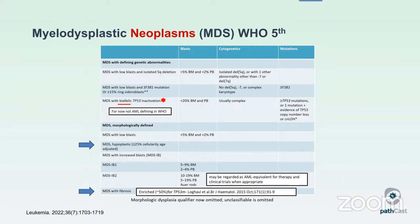MDS with low blasts and SF3B1 mutation is the other category. This is largely the same as the previous MDS with ring sideroblasts, because the majority of MDS with ring sideroblasts do have SF3B1 mutations. The one exception allowed by the WHO but not by the ICC is if you don't have an SF3B1 mutation but have greater than or equal to 15% ring sideroblasts, you can still classify the case in this category, calling it MDS with ring sideroblasts. You cannot have deletion 5Q, monosomy 7, or a complex karyotype, and the WHO requires an SF3B1 mutation variant allele frequency of 5%.